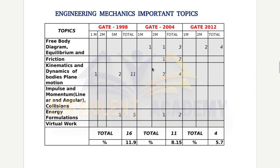The syllabus is split up as follows: FBD equilibrium and trusses, friction, kinematics, impulse and momentum, energy formulations, and virtual work. Looking at IIT Delhi GATE papers from 1992, 1998, 2004, and 2012 — we don't have reliable info for 1992, but for 1998, 2004, and 2012 we have good data. In 1998, free body diagram, equilibrium, and trusses had one-mark, two-mark, and five-mark questions.